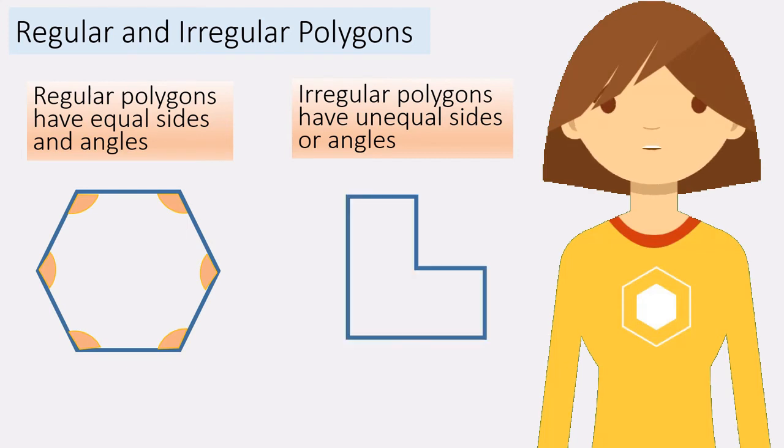However, in this shape, all the sides and angles are not equal, so it's an irregular polygon.